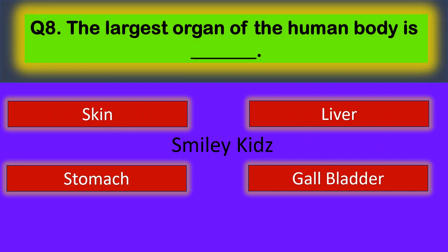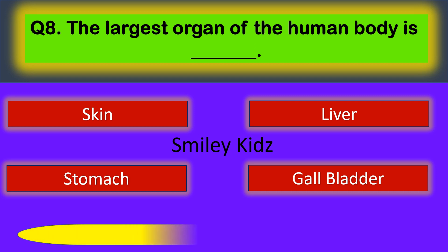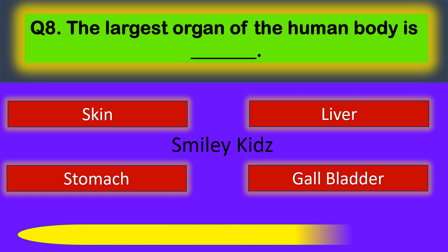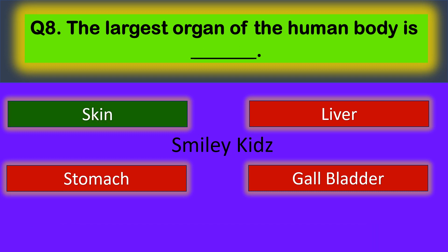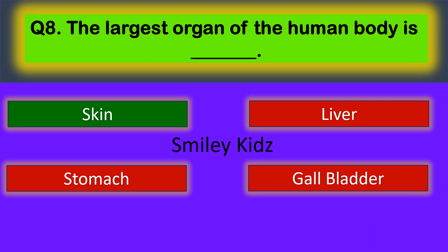Question number eight: the largest organ of the human body is — your options are: skin, liver, stomach, and gallbladder. The correct answer is skin. The largest organ of the human body is skin.